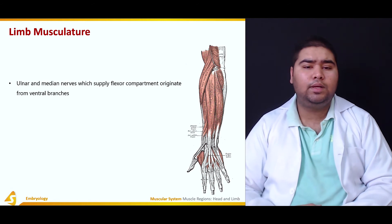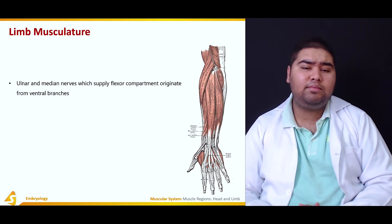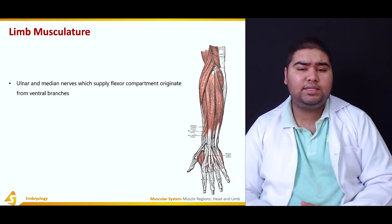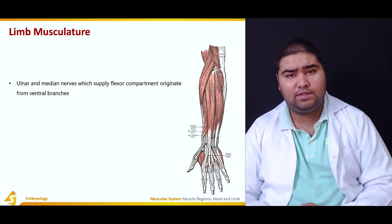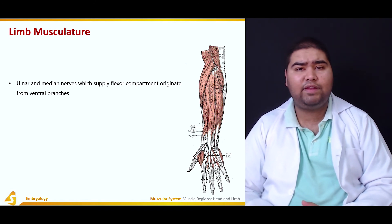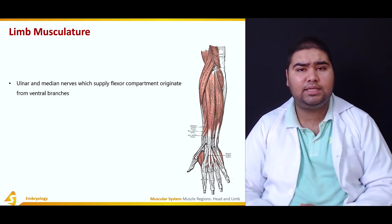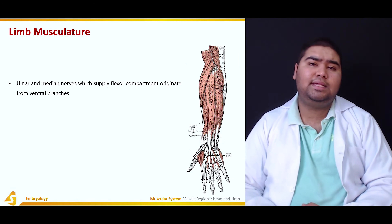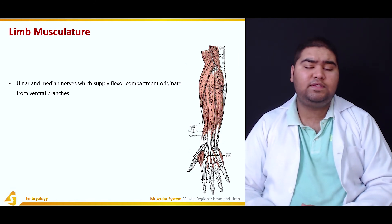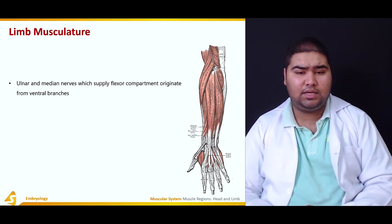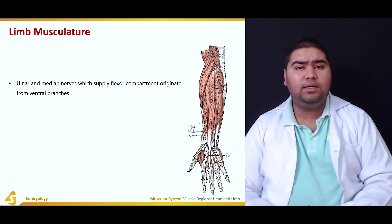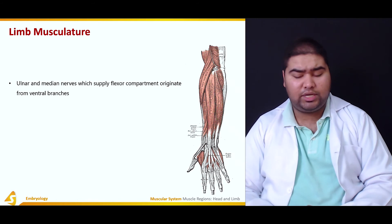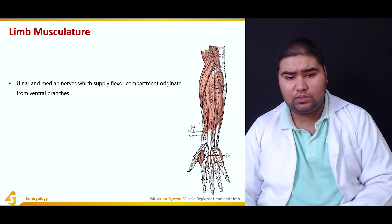The ulnar nerve and the median nerve supply the flexor compartment of the upper limb. These two nerves originate from the ventral branches only.